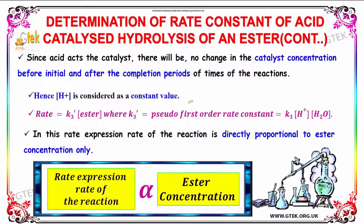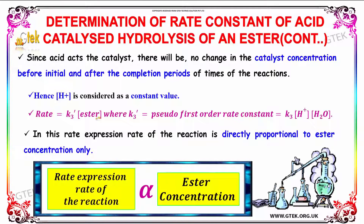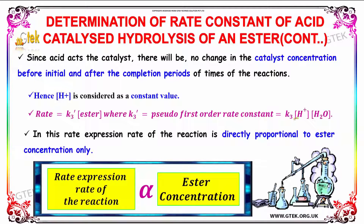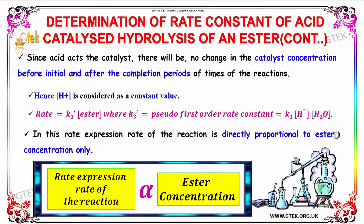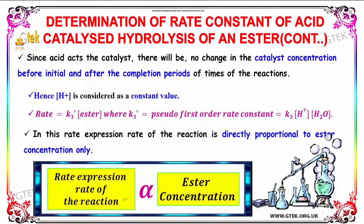Here is the pseudo-first-order reaction and rate constants. H-plus is considered a constant value. The rate is equal to K3-dash times [ester], where K3-dash is the pseudo-first-order rate constant given by K3 times [H+] times [H2O]. In this reaction, the rate of the reaction is directly proportional to the ester concentration.